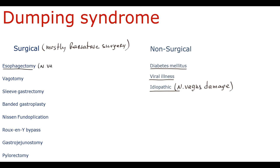Esophagectomy disrupts vagal innervation of the stomach, because the trunks of the vagus nerve travel down to the stomach along the esophageal wall. With esophagectomy, the stomach becomes denervated, and with vagal denervation, the reservoir, digestion, and gastric emptying functions become impaired. Nowadays, vagal-sparing esophagectomy is mostly performed, and this modified version preserves normal postoperative gastric emptying in 70% of patients.